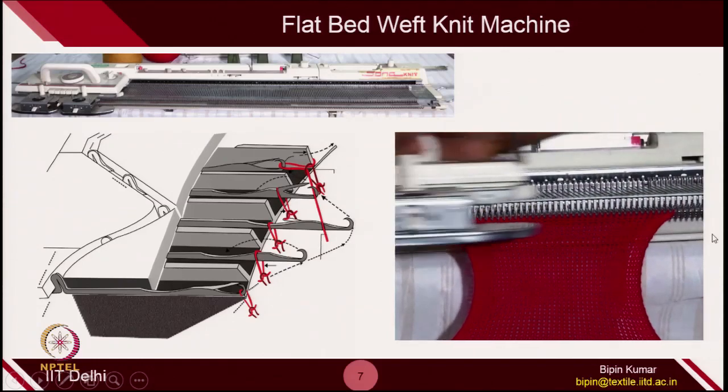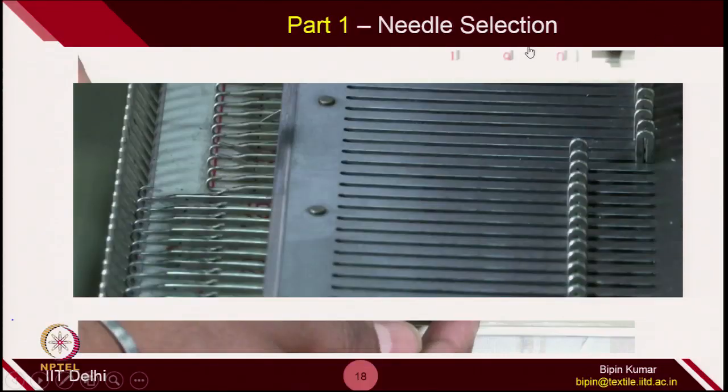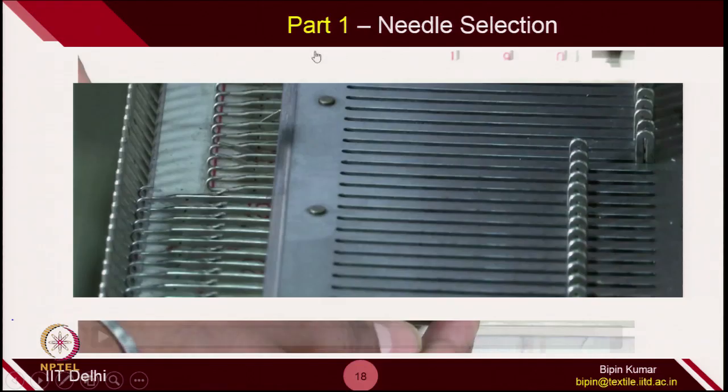You can see how the machine is running. Before we start operating the machine, we have to define how much width of fabric we want to create. Naturally, the first thing is needle selection, because our bed width can be more than 1 or 2 meters depending on production capacity. We need to first select how many needles we actually want to operate on the machine before we start making fabric.